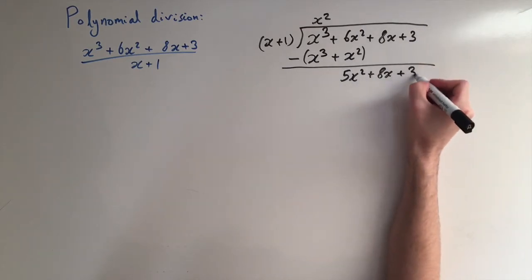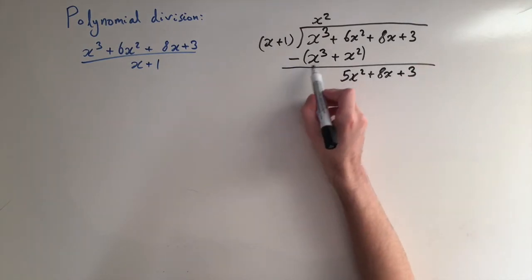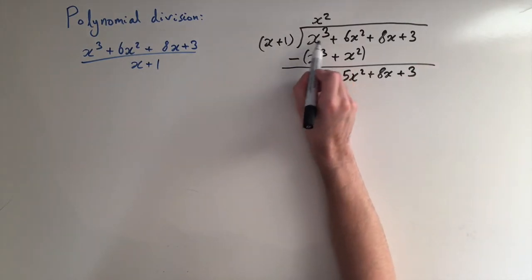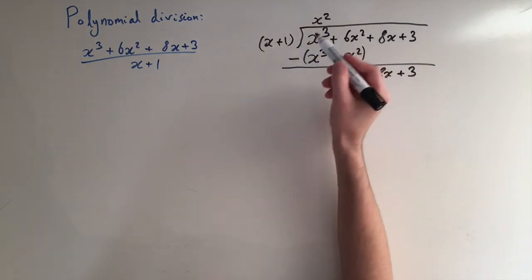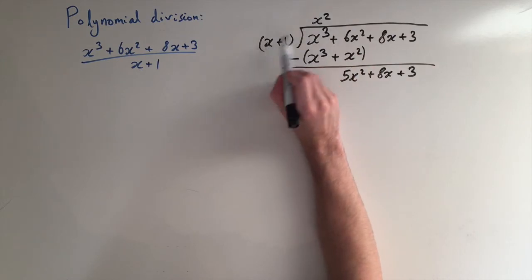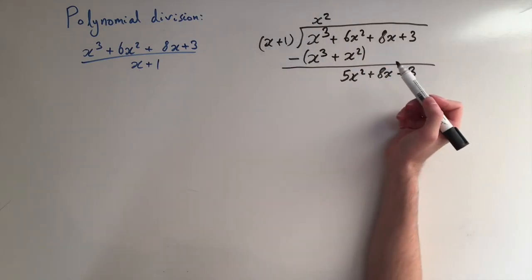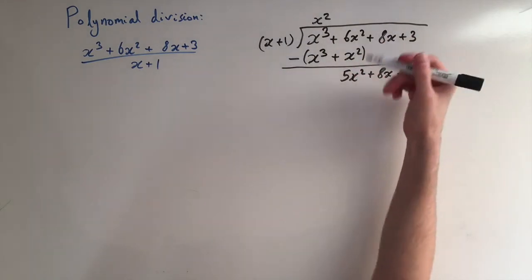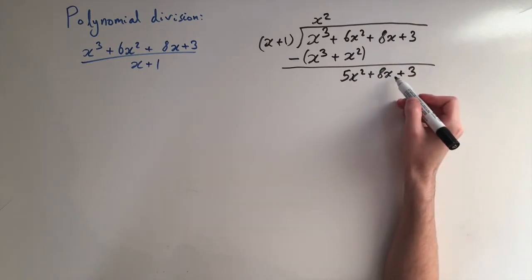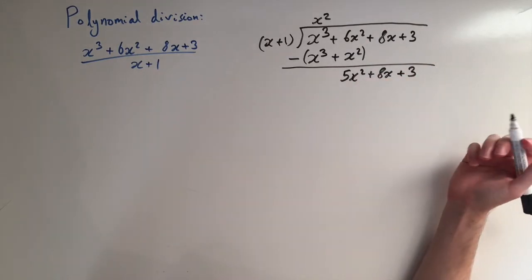Plus 3. So this is the whole idea — we've managed to eliminate the highest power, because we looked at the leading term and balanced everything. Now we can just iterate this process: get rid of the x squared terms, then the x terms, and see what we're left with.